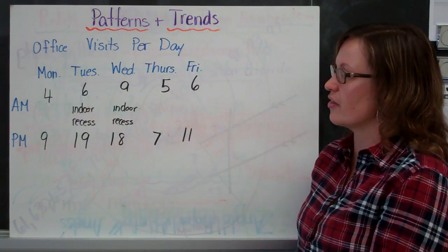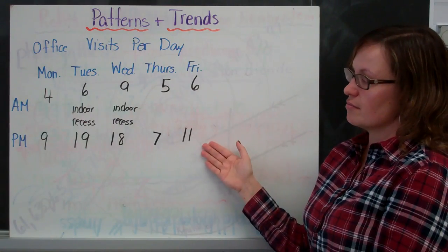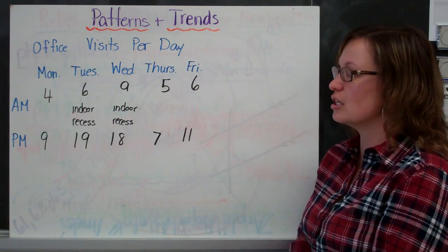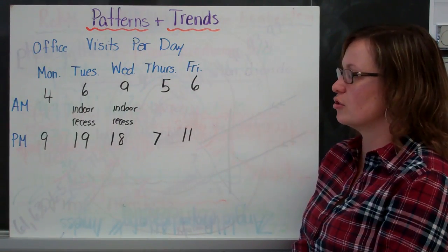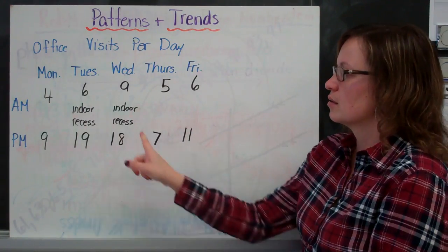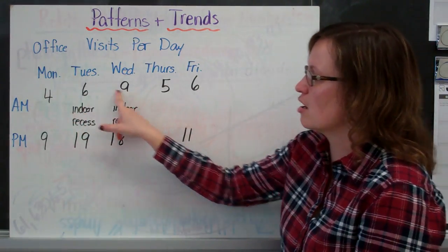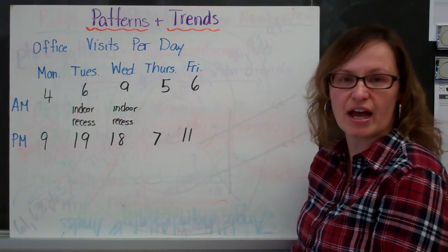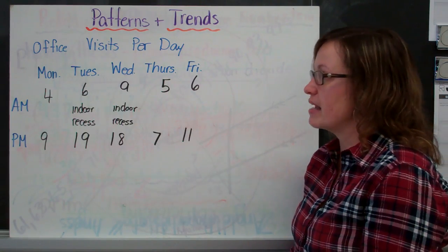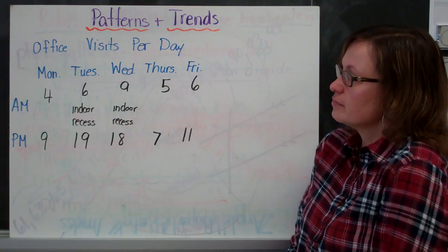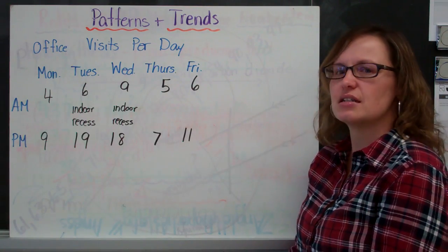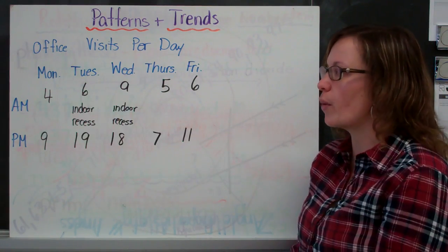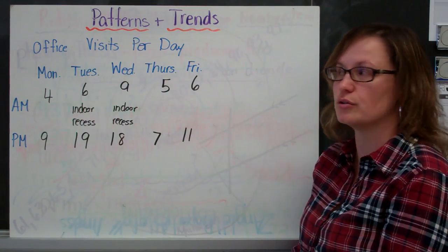I can definitely see that there's a trend towards the afternoon, there's usually more students being sent to the office. There's some extra information here where there's an indoor recess. Maybe I want to think about does that have any effect on my data? Could I make any interpretations about that? So your assignment is to interpret this data and think about ways that you could represent it to support your interpretation.